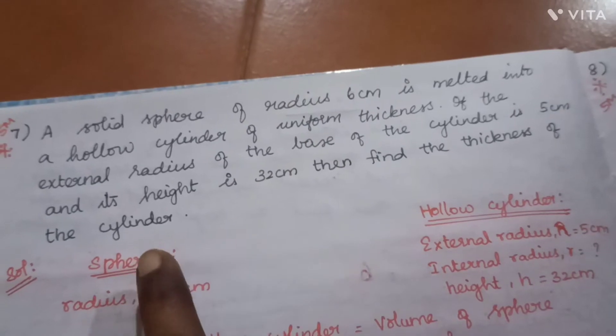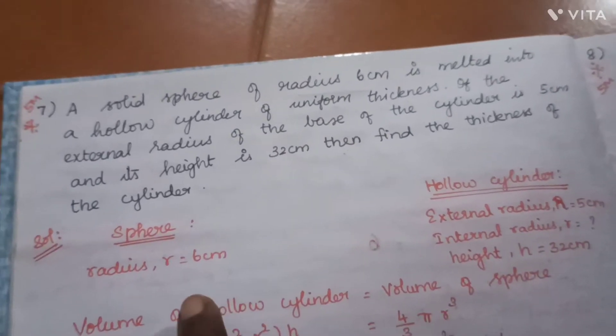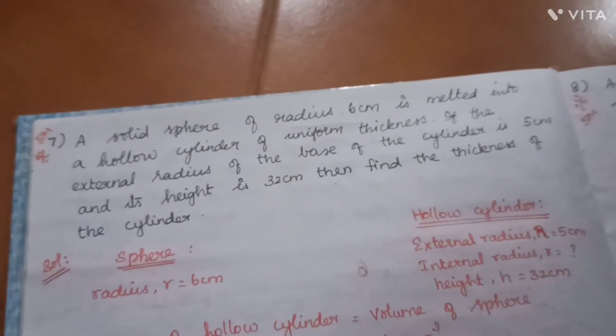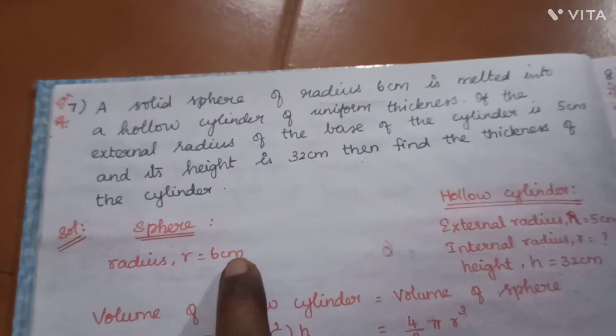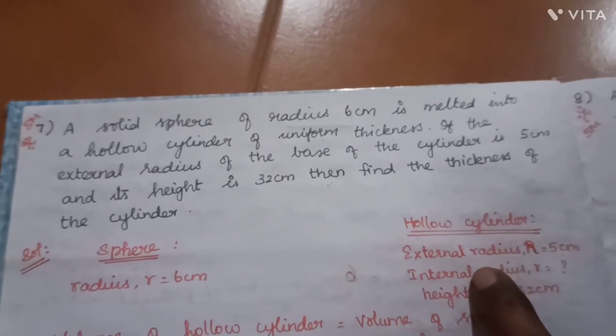The two shapes are sphere and hollow cylinder. This is the data of the sphere: radius is 6 cm. And hollow cylinder has external and internal radius.